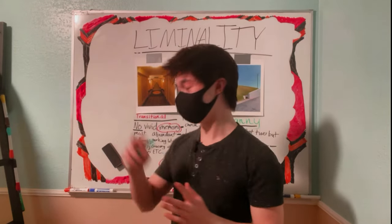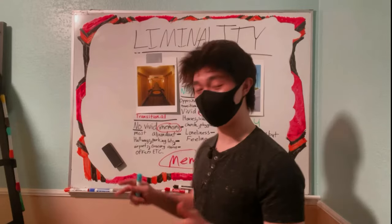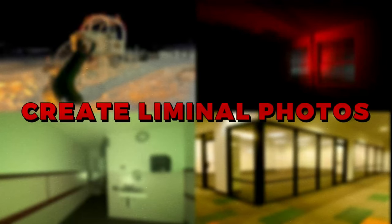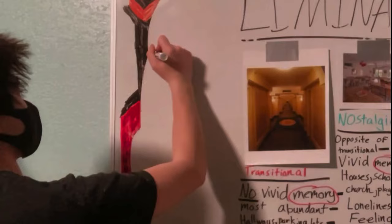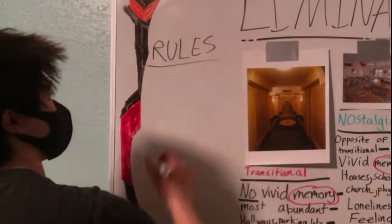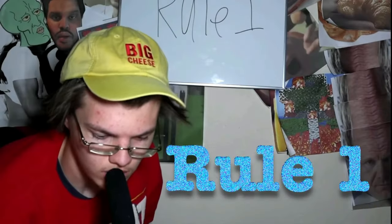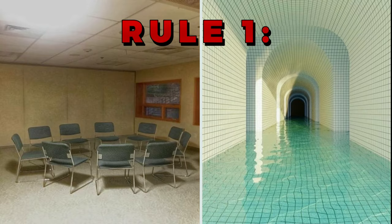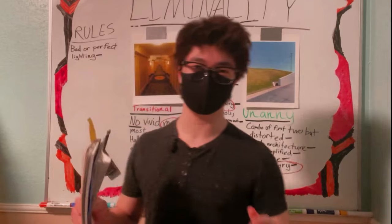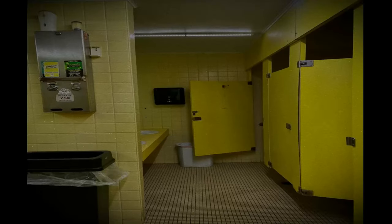So that's what a liminal photo is. Now we can set some rules. I did get some of these rules from Alpha's video, but I did add a few more. Rule number one: bad or perfect lighting — there's really no in-between, it just depends on the location. Also, changing the color from red to yellow or green also helps a lot. Rule number two: grain and noise. It makes the image feel a lot more old and authentic, like a picture that your mom took in the 80s.